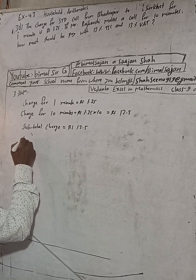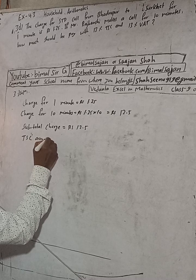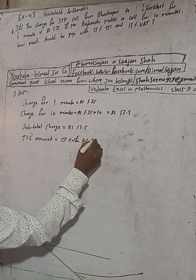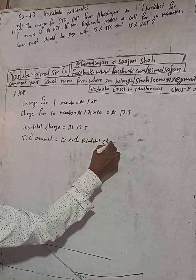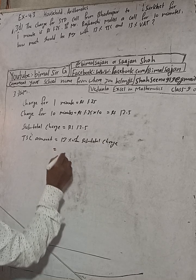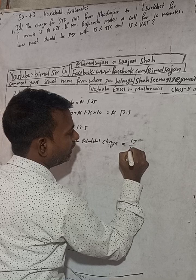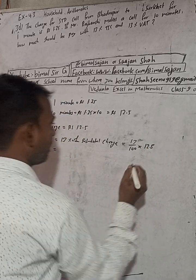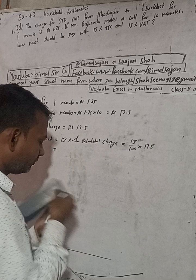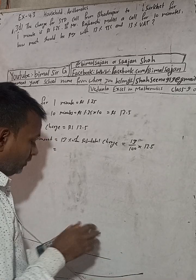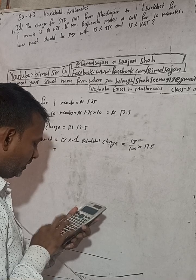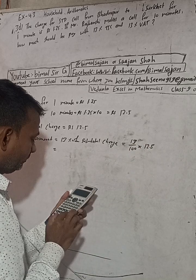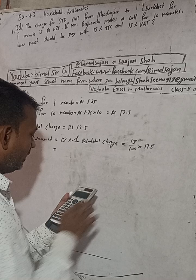Now, TSC amount is equal to 13% of subtotal charge. 13% means divide 13 by 100, of means multiply by the subtotal charge. So we calculate 12.5 into 13 divided by 100.